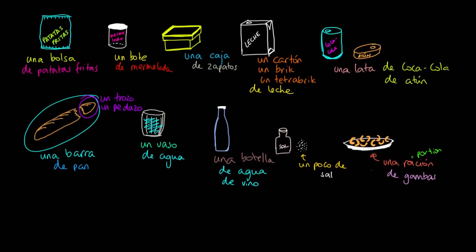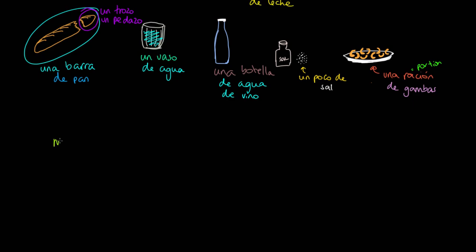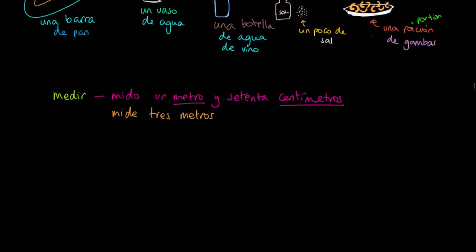Let's now look at some verbs which will typically be associated with measures. The most important one is medir — to measure. I can say things like mido un metro y setenta centímetros. Notice that in Spanish we always measure in centimetres, metres, kilometres — the metric system, not imperial. If something else measures, mide tres metros — it is three metres long. So medir is a pretty regular verb meaning to measure.